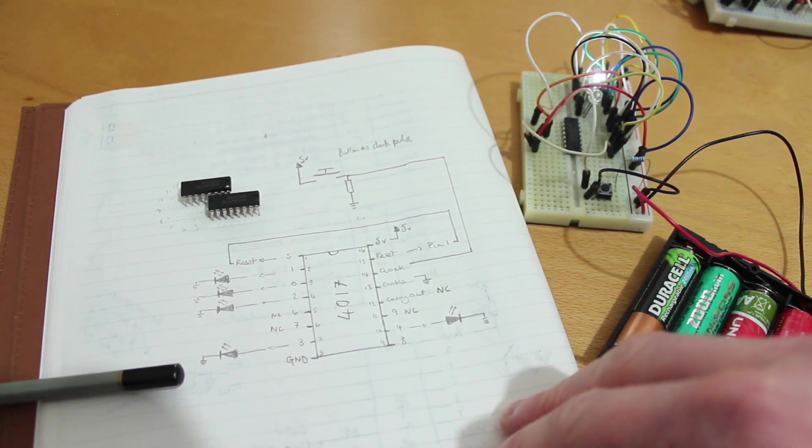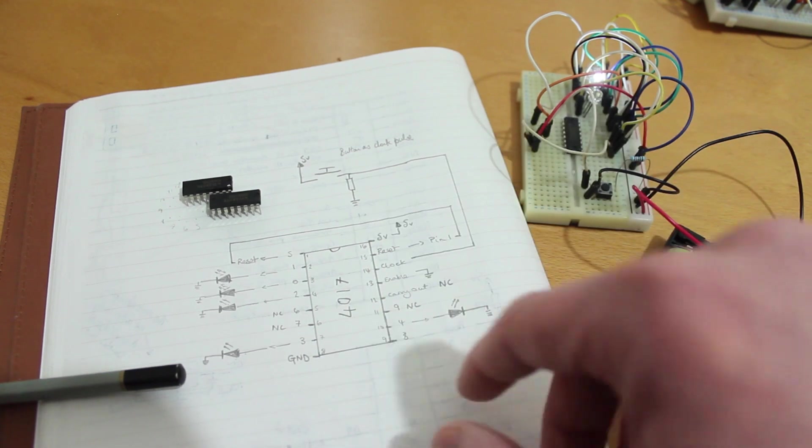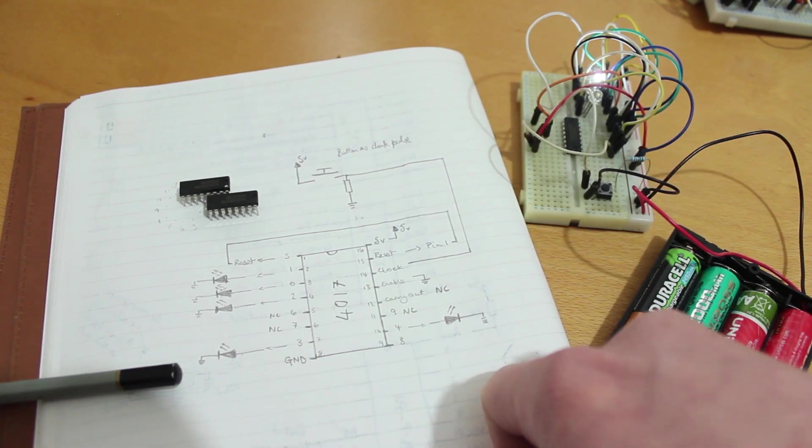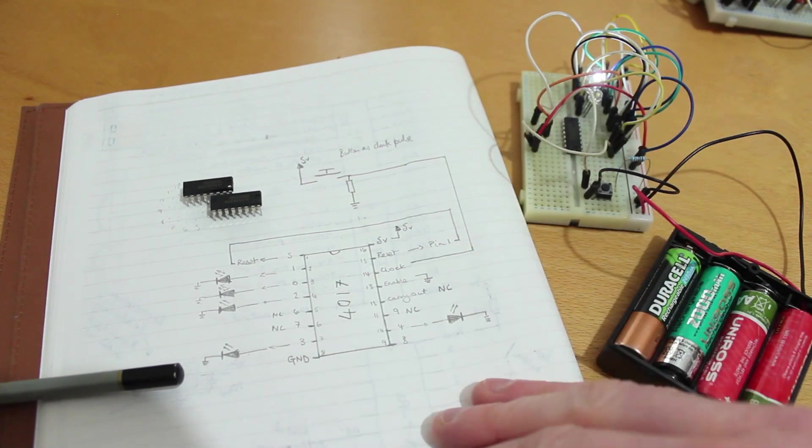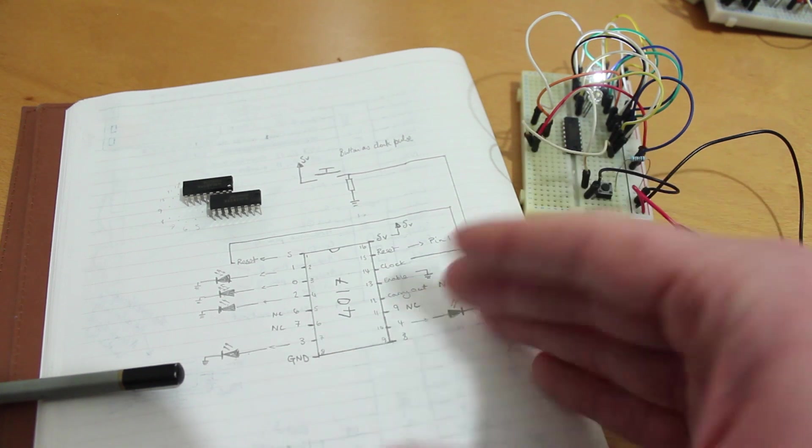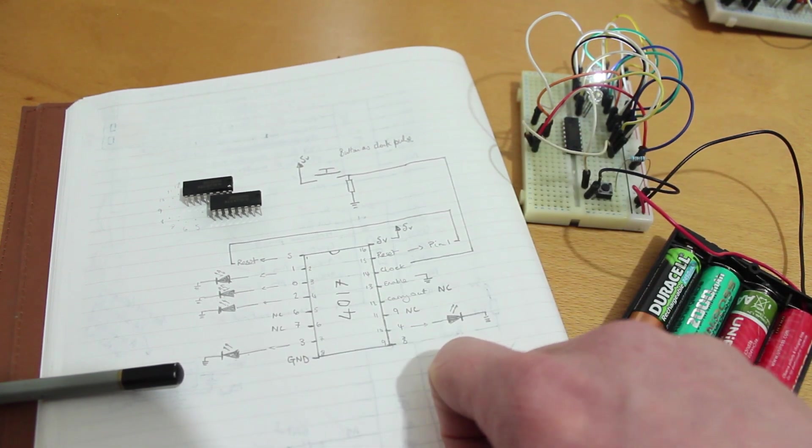You could also use it as sort of a number counter, like a dice perhaps, if you have a 555 timer. You press it and it will stop at a certain point or something or trigger at a certain point, and so you can count through the numbers.